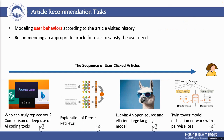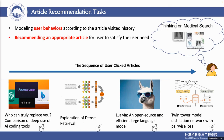I first introduce the article recommendation task, which helps users find the real needed information from massive articles. The article recommendation task aims to model the user behavior according to the clicked articles. Then, the article recommendation task asks models to recommend an appropriate article for users, such as in a medical search scenario.